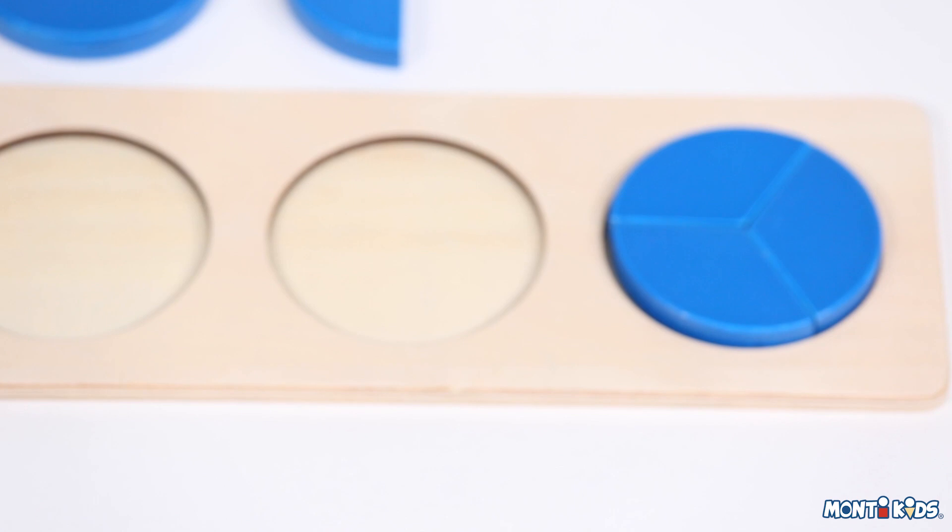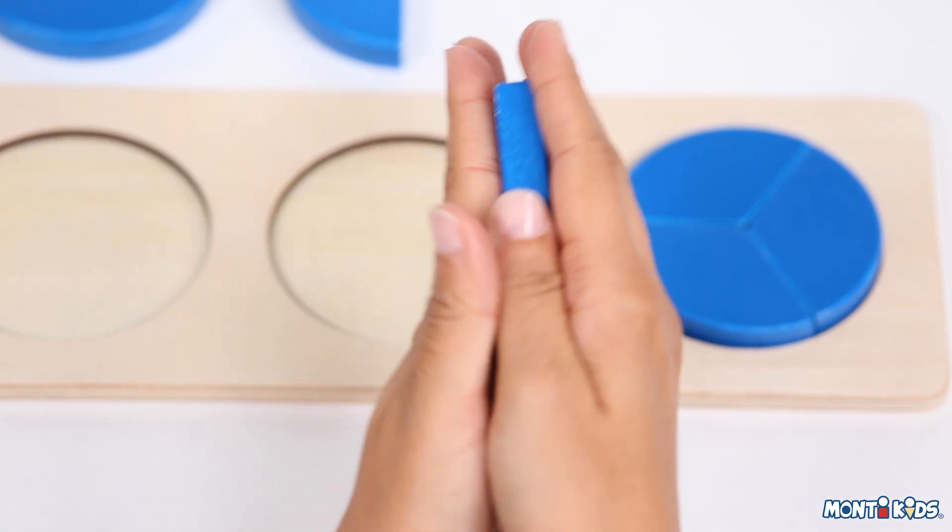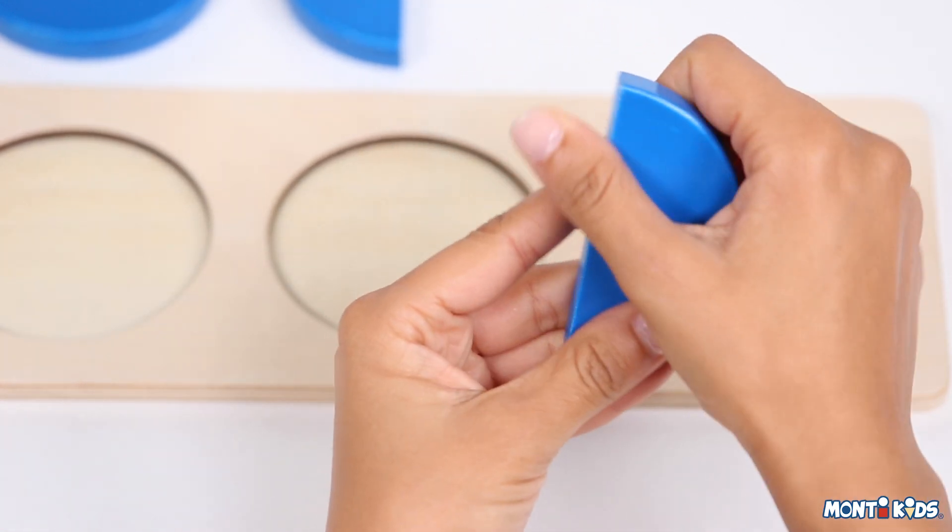Invite your child to trace it. When he gives it back, feel the piece in your hands, then offer him a turn to feel. You want him to fully experience the shape and weight of the wood before you name it.